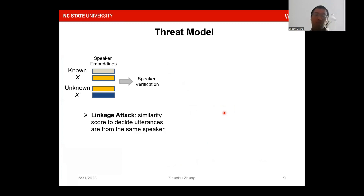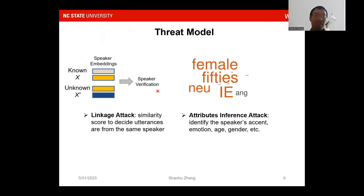Now I'll describe our threat model. Our threat model includes two scenarios. The first is a linkage attacker: the attacker uses a similarity score to determine whether utterances come from the same speaker, using two databases to find a speaker verification match. The second is an attribute inference attacker: the attacker can identify the speaker's accent, emotion, age, and gender using voice attribute inference models.